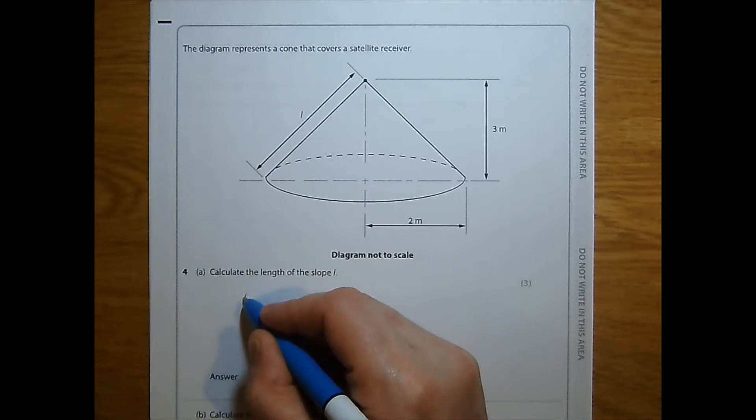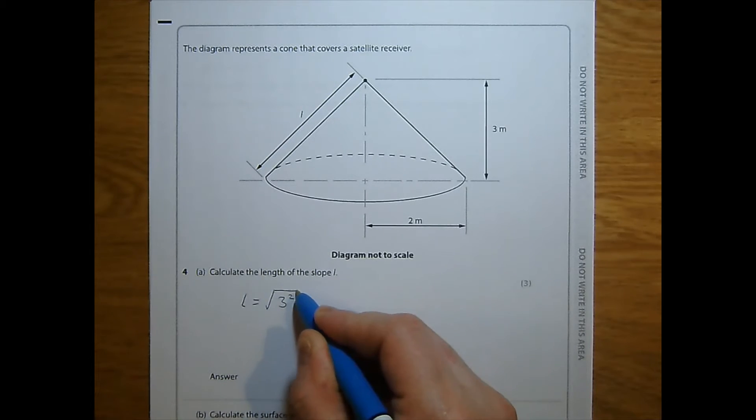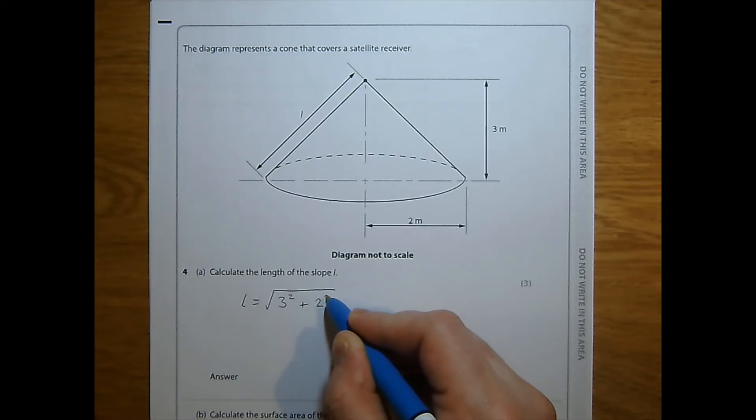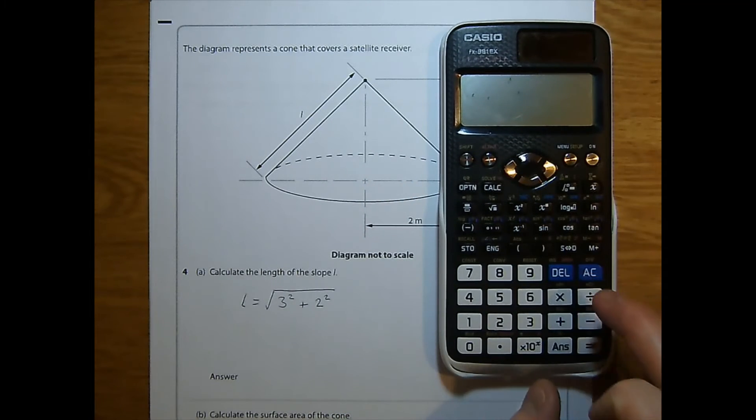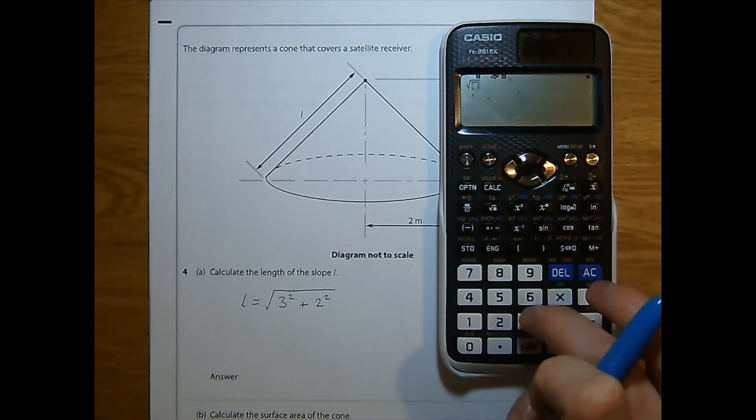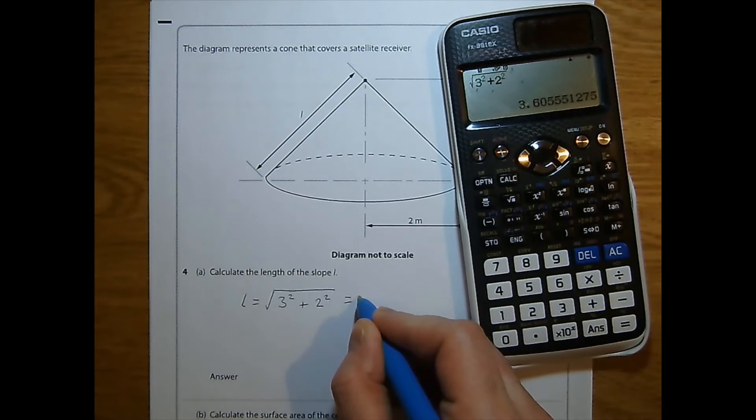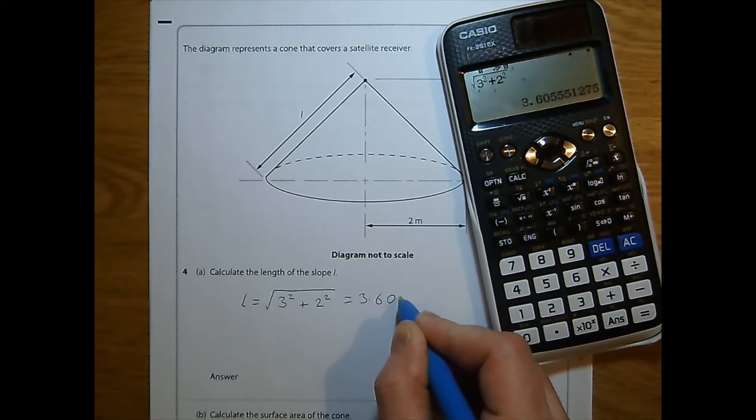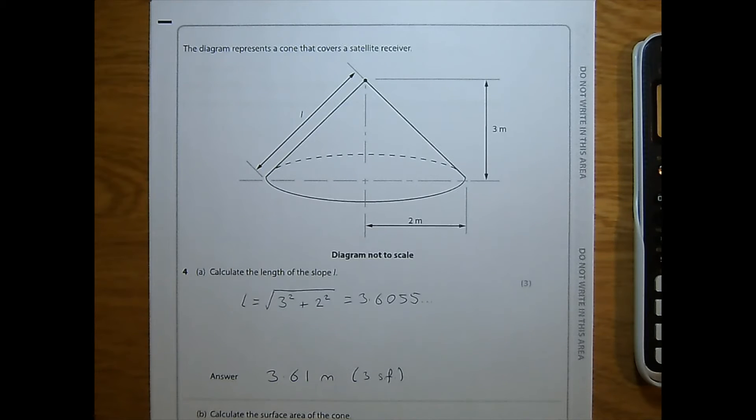Since this is the hypotenuse, in order to work out L, we need to square root the sum of the other two sides squared. That can be done in our calculator. Square root 3 squared plus 2 squared gives us 3.6055, etc., which we can round to 3.61 meters. That's three significant figures. So that's part A done. Let's move on to part B.